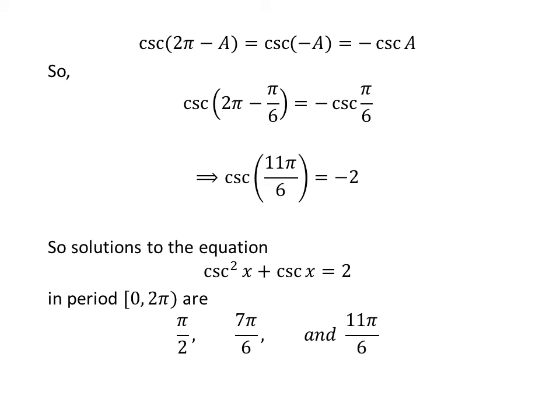So the solutions of the equation square of cosec(x) plus cosec(x) is equal to 2, in the interval 0 to 2π, are: π/2, 7π/6, and 11π/6.